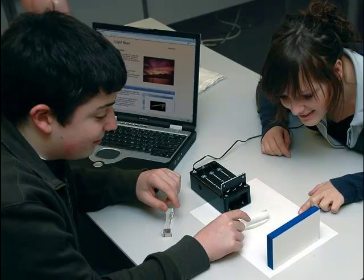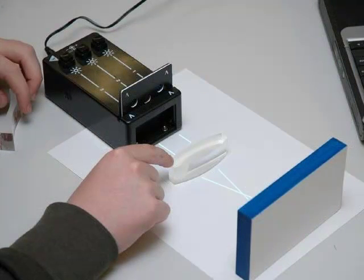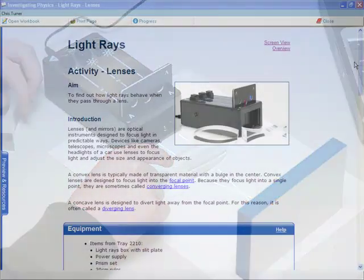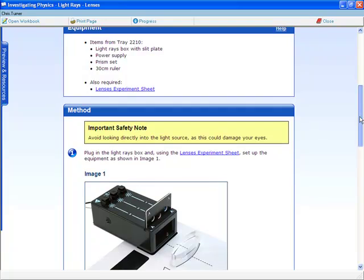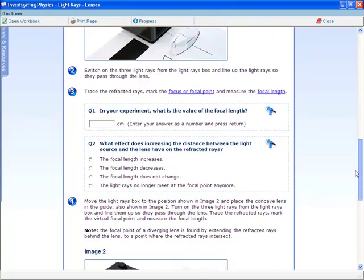Next, students perform an experimental investigation. In this example, they are performing an experiment using lenses to observe how light is bent. They follow the inquiry model of aim, equipment, method, results and conclusion.